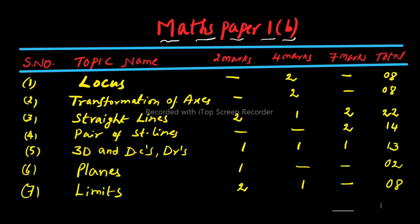Now look at Maths Paper 1B. As usual: serial number, topic name, 2 marks, 4 marks, 7 mark questions, and total. The first topic is Locus — no 2 marks, but 2 four-mark questions will come, and no 7 marks. So Locus has 8 marks weightage.